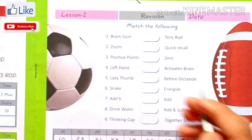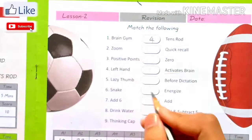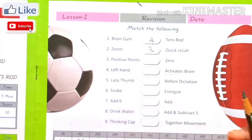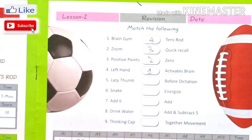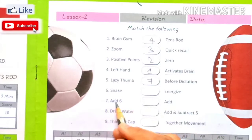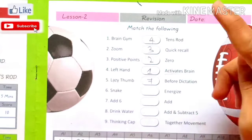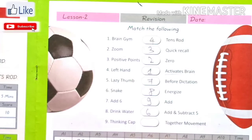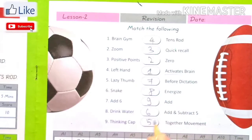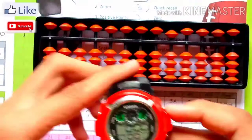One more time. We are thinking cap before dictation. Now let's start our quiz. We are starting a row and we will fix the timer. 1, 2, 3, start.